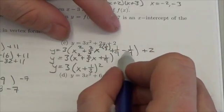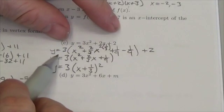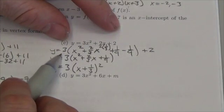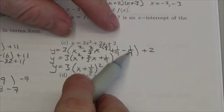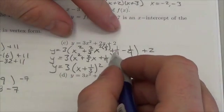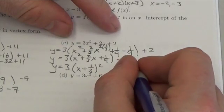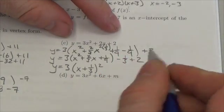And then I'm going to take that negative 1/9 out, but I'm going to do it by multiplying by 3. Okay, so 3 times negative 1/9 is going to be negative 3 over 9, which is negative 1/3 plus 2.